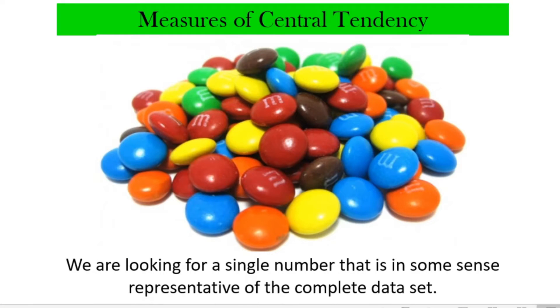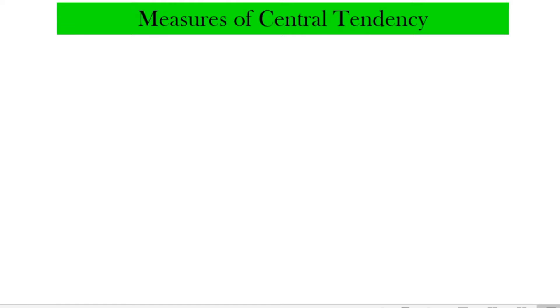Most often than not, the data that we gather are different. What we want to do is to identify a value that in some sense is representative of the entire dataset — just like our M&Ms here with different colors. We are trying to identify what single color could represent the entire dataset despite the knowledge that these M&Ms have different colors. There are three commonly used measures of central tendency.